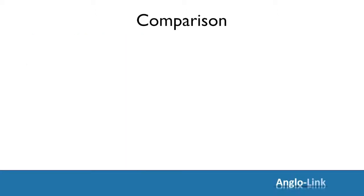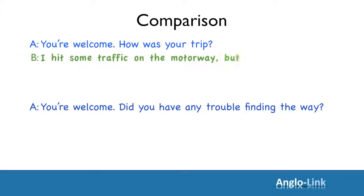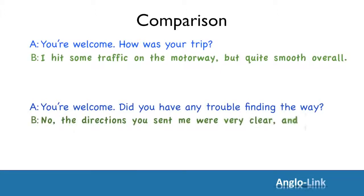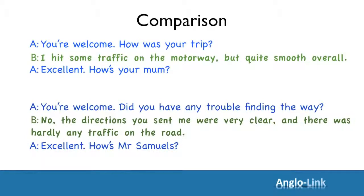Let's look at the next section. Informal: 'You're welcome. How was your trip?' Formal: 'You're welcome. Did you have any trouble finding the way?' Notice that 'you're welcome' is used both in formal and informal situations. Informal response: 'I hit some traffic on the motorway but quite smooth overall.' Let's make that sentence structure a little more formal: 'No, the directions you sent me were very clear, and there was hardly any traffic on the road.' Informal: 'Excellent. How's your mum?' Formal: 'Excellent. How's Mr. Samuels?'